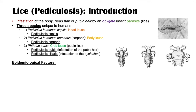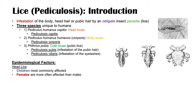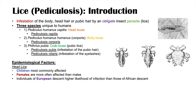Now we'll talk about epidemiological factors, split by species. With regards to head lice, children are most commonly affected, females are more often affected than males, and individuals of European descent have a higher likelihood of infestation than those of African descent. The reasons for these factors are not well understood.